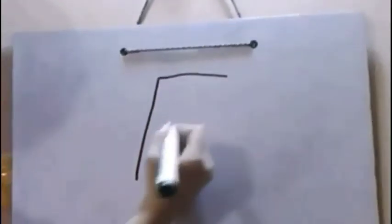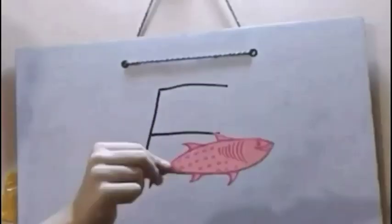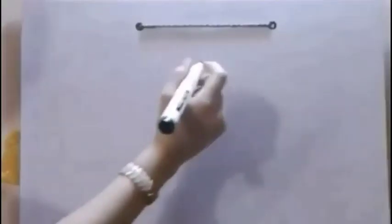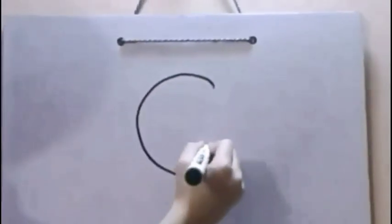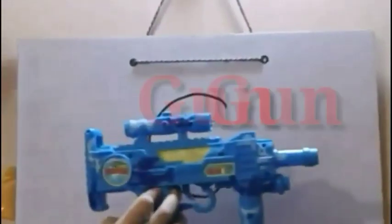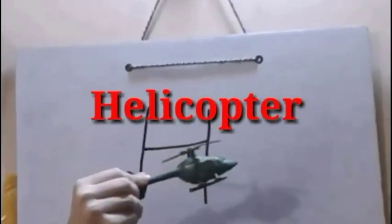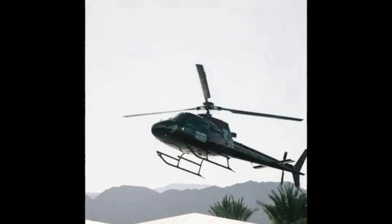Now we write F, F for fish. G, G for gun. H, H for helicopter.